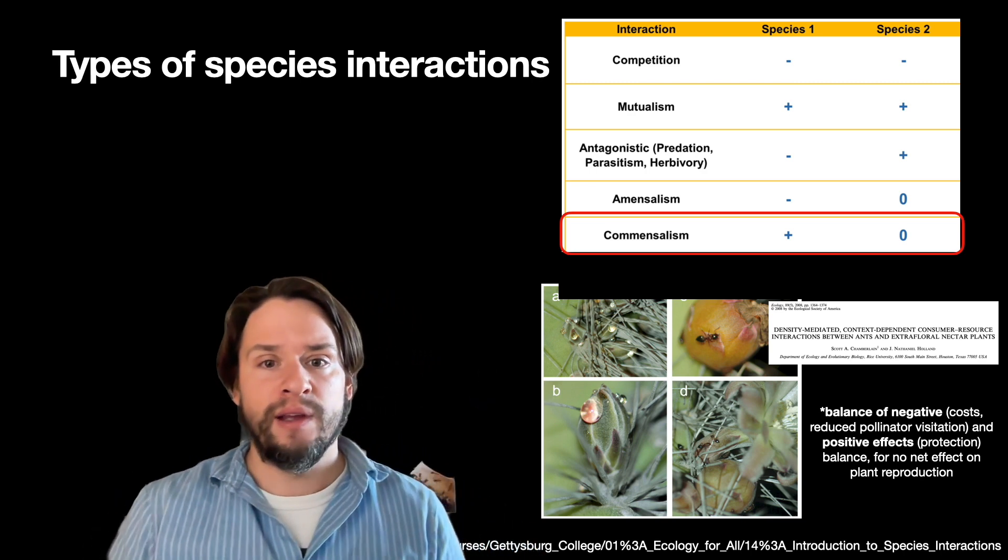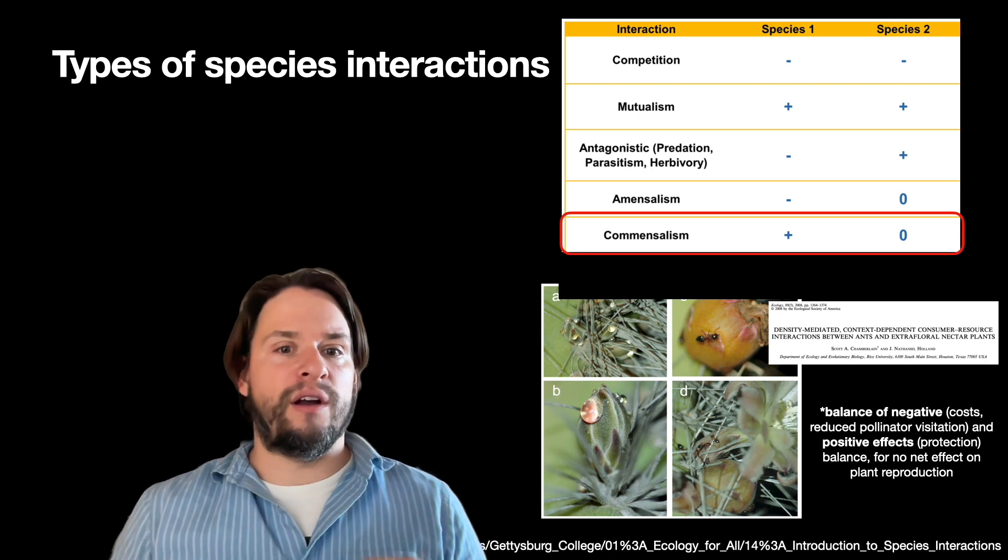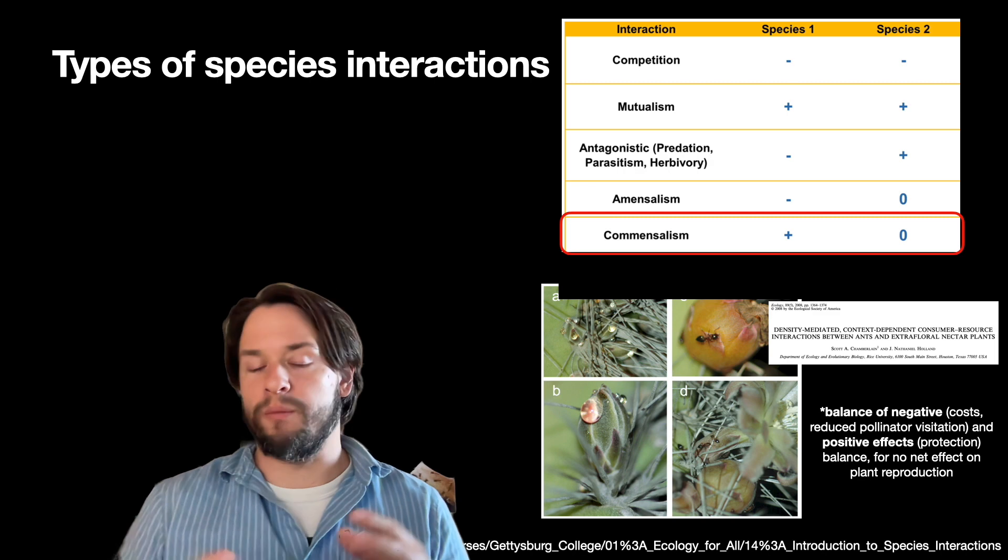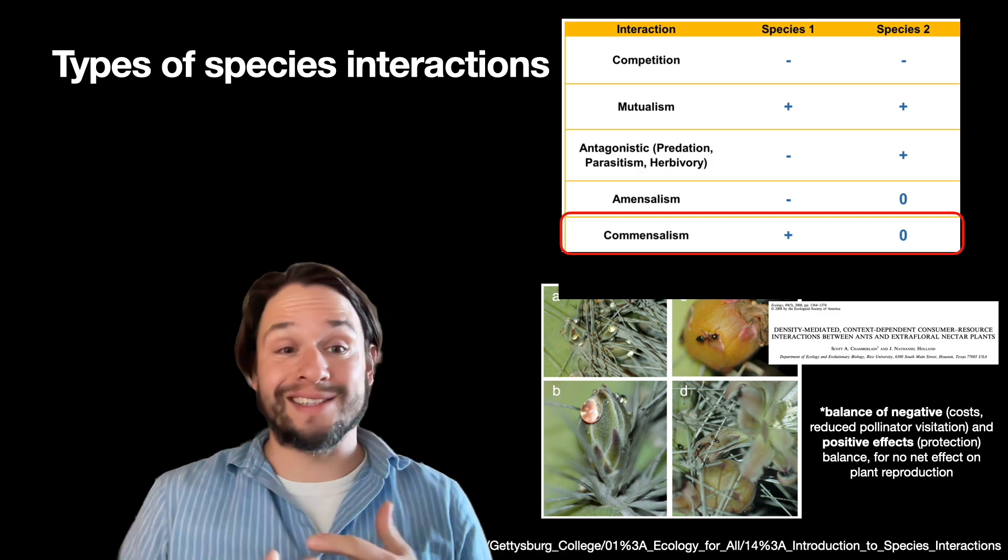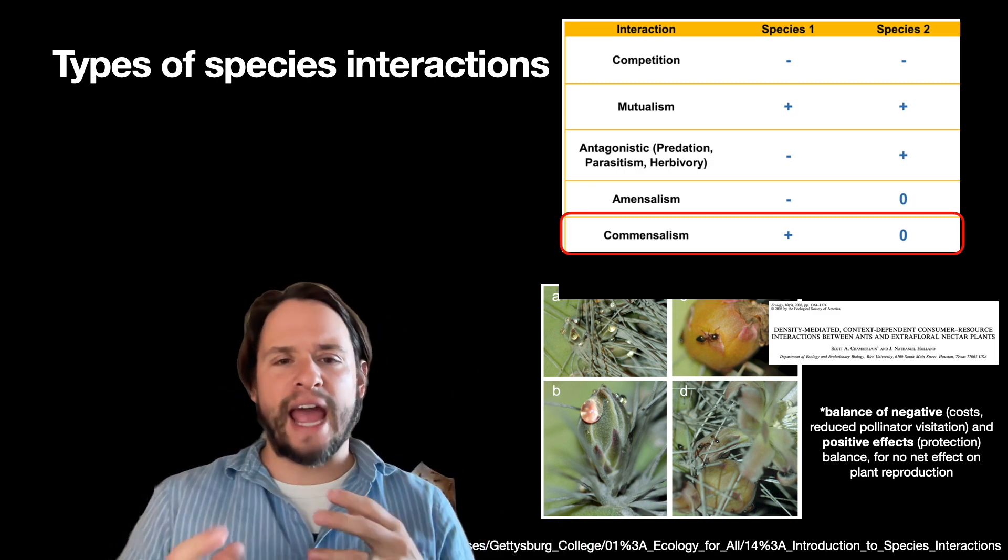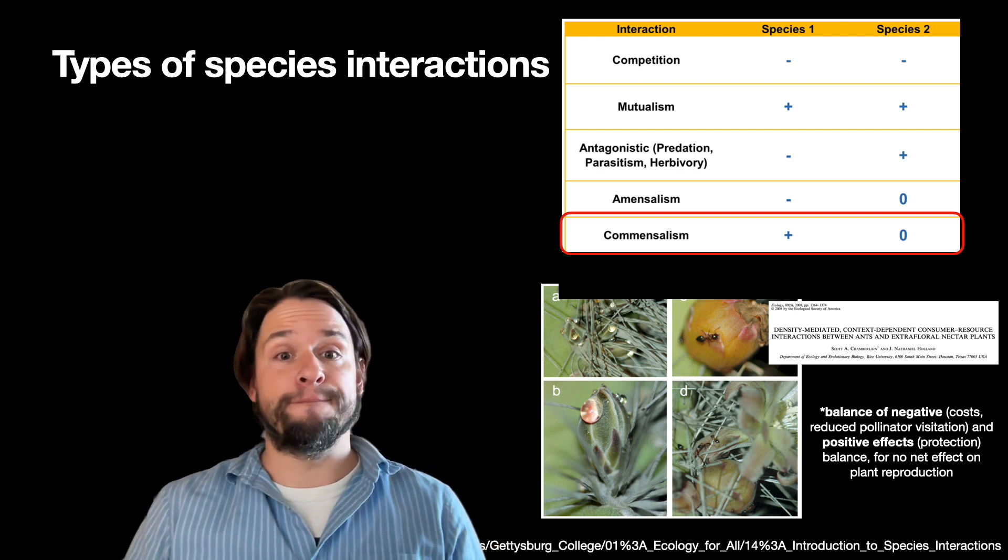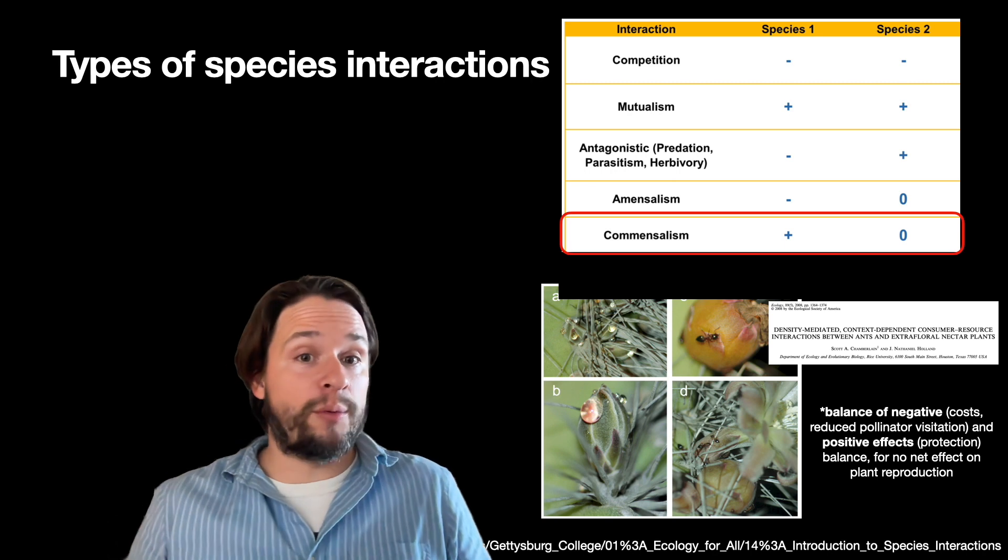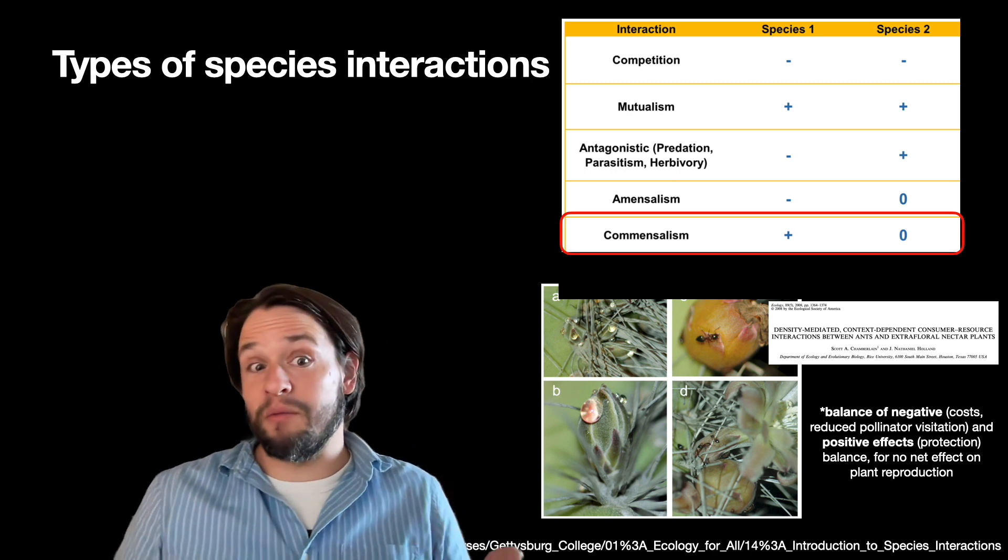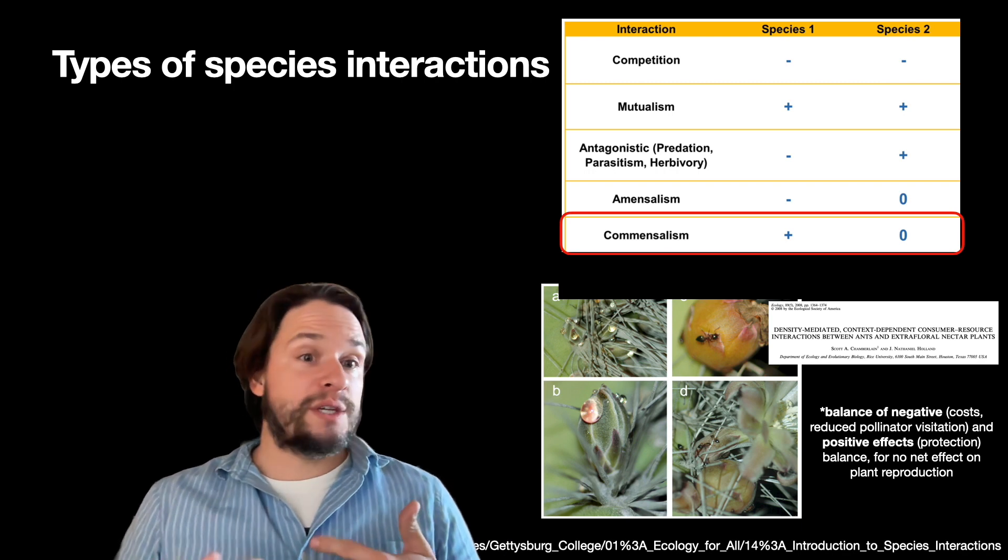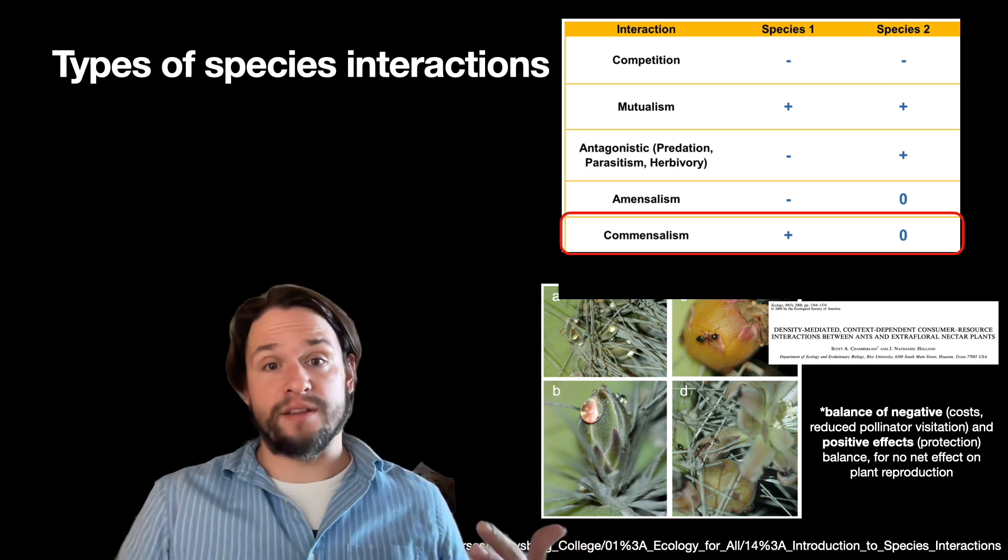So here's a nice example where a cactus and an ant interaction—not necessarily mutualism—where the cactus is providing extra floral nectaries or providing a food resource that the ants feed on. You might think that that would be a mutualism, but it turns out when some researchers looked closely, there are actually some positive benefits to the plant. So the plant does get some protection from housing these ants and encouraging their density on the cactus.